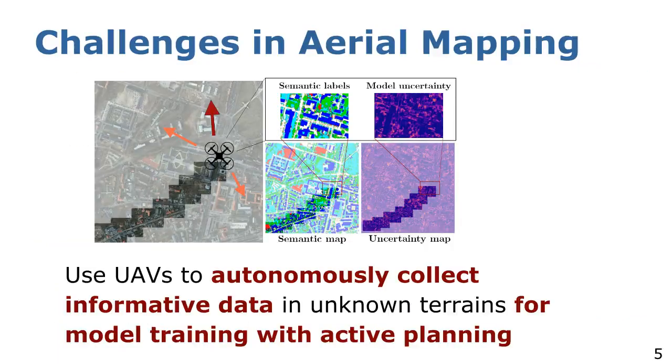To tackle these challenges in aerial semantic mapping, we propose a planning framework for active learning and UAV-based terrain monitoring. We estimate model uncertainty in semantic segmentation and fuse it in global terrain maps. Based on the map, our planning approach guides a UAV to collect the most useful training images for labeling. In this way, our pipeline aims to reduce the number of images that must be labeled by a human annotator.